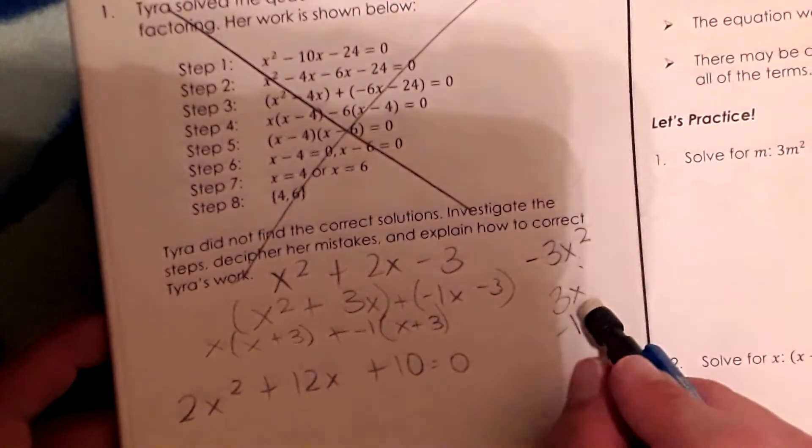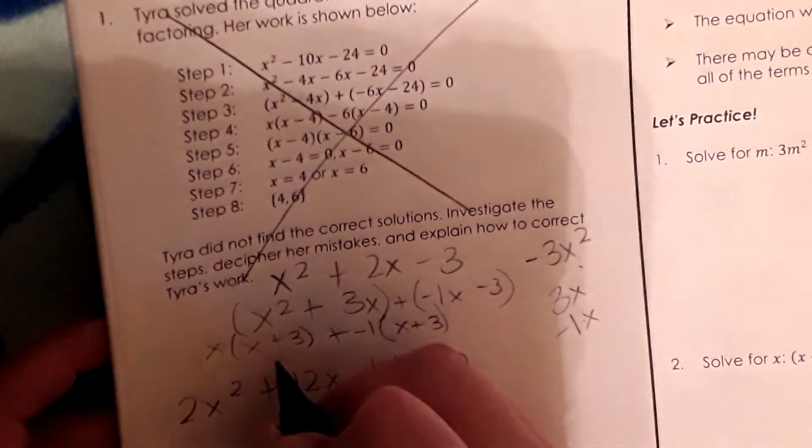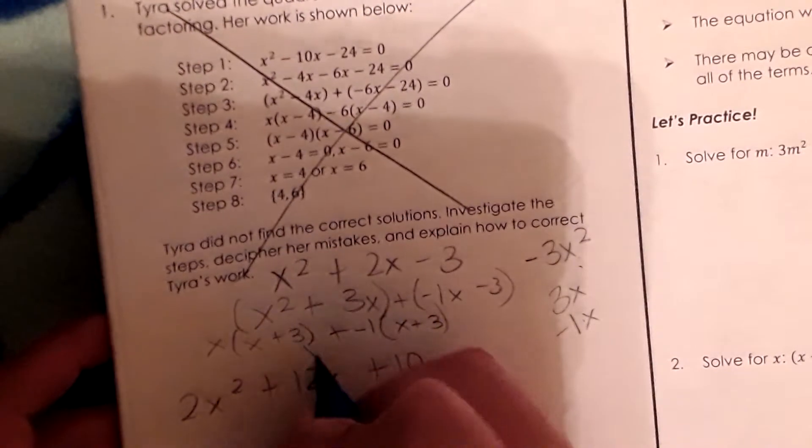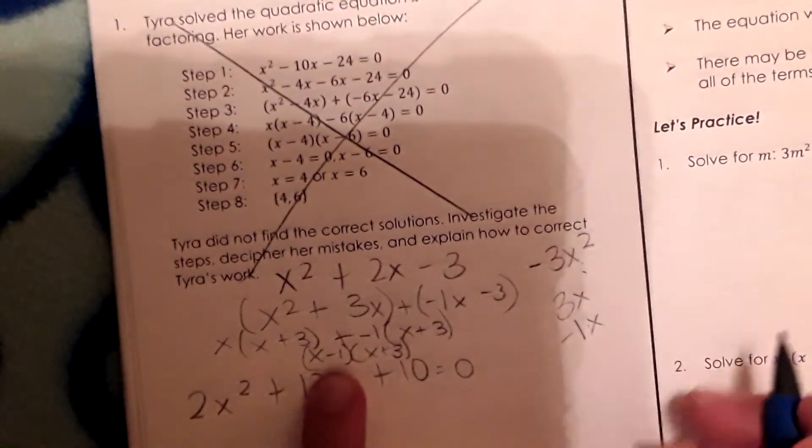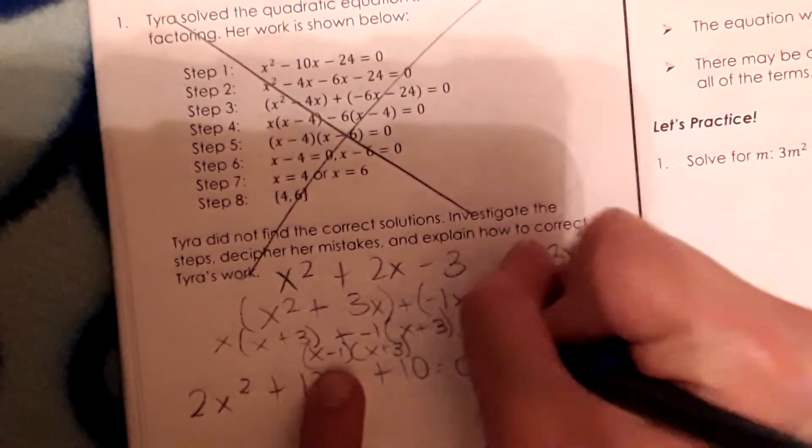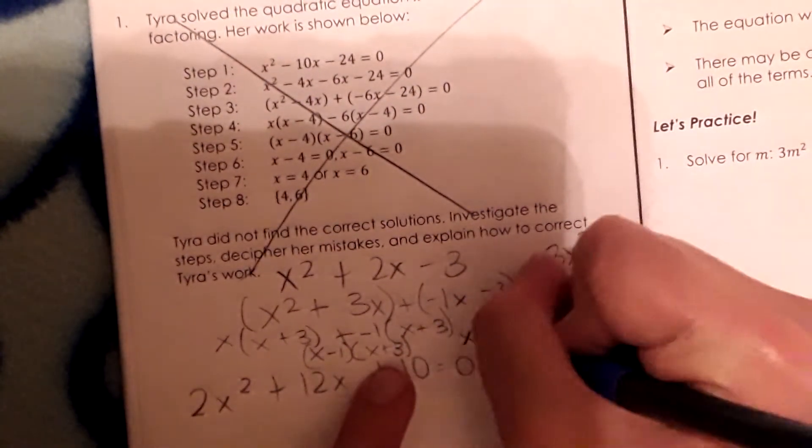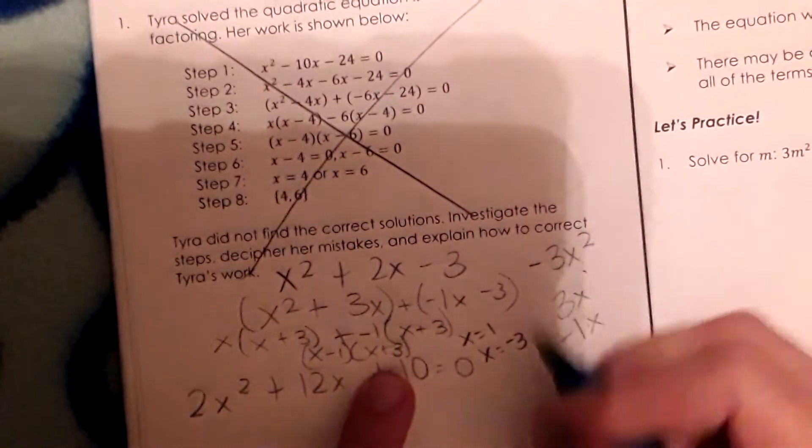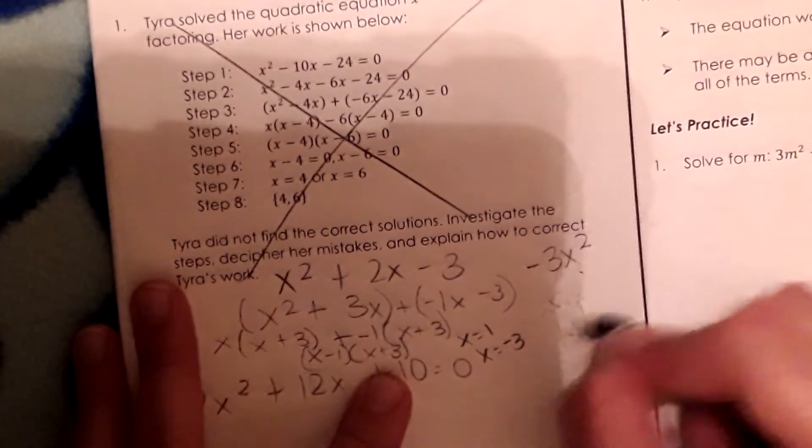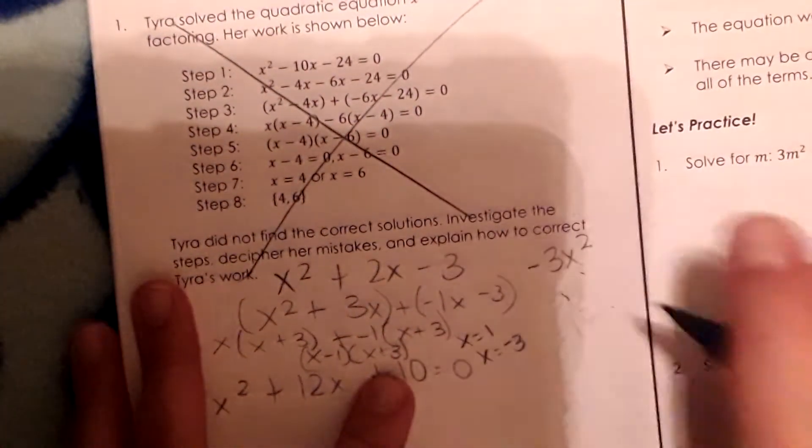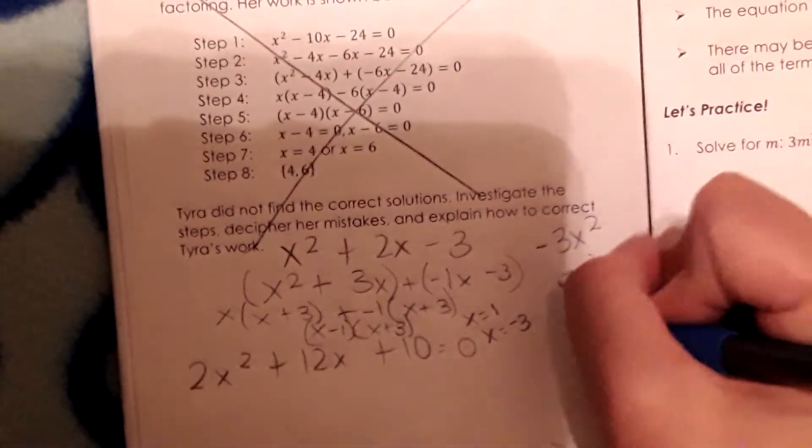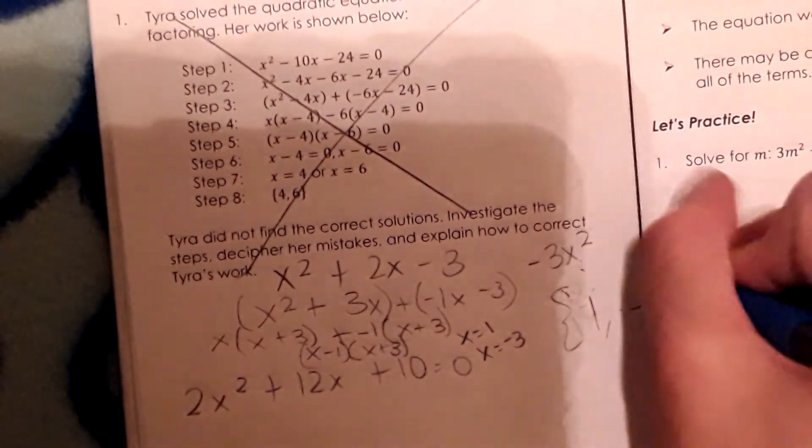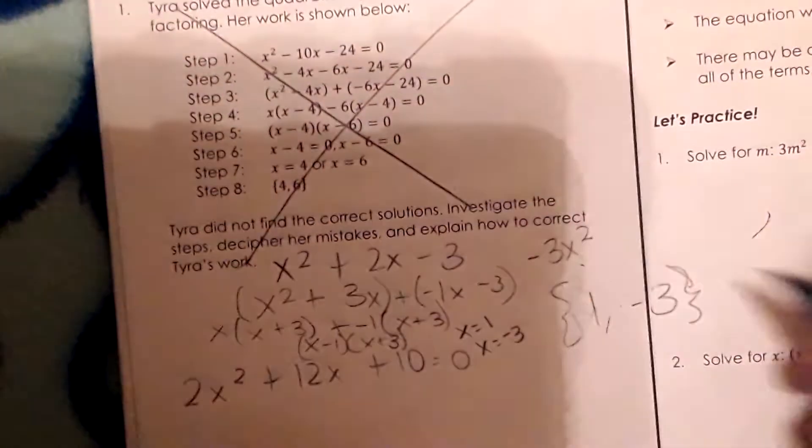And our two factors is x minus 1 and x plus 3. If we were to set these both equal to 0 we would get x equals 1 and x equals negative 3. So our solution set would be 1 and negative 3. So that's what you would look for in the answer choices.